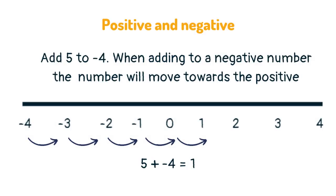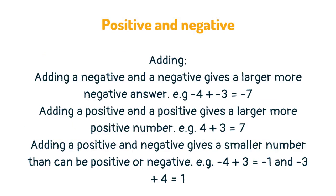When adding to a negative number, the number will move towards the positive. Adding a negative and a negative gives a larger, more negative answer. Adding a positive and a positive gives a larger, more positive number. Adding a positive and a negative gives a smaller number that can be positive or negative.